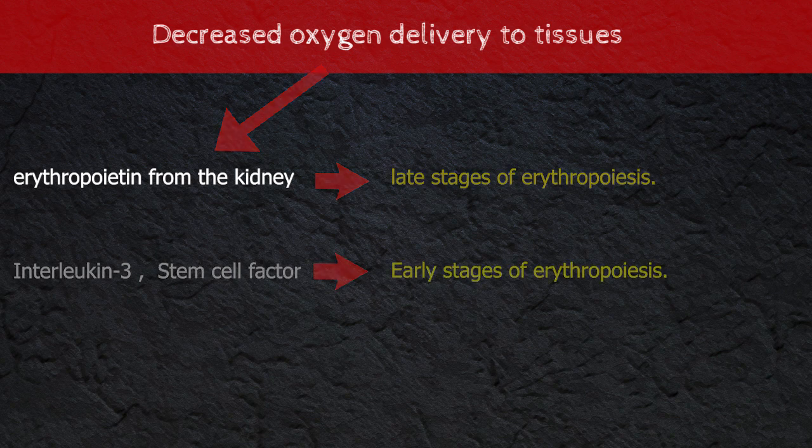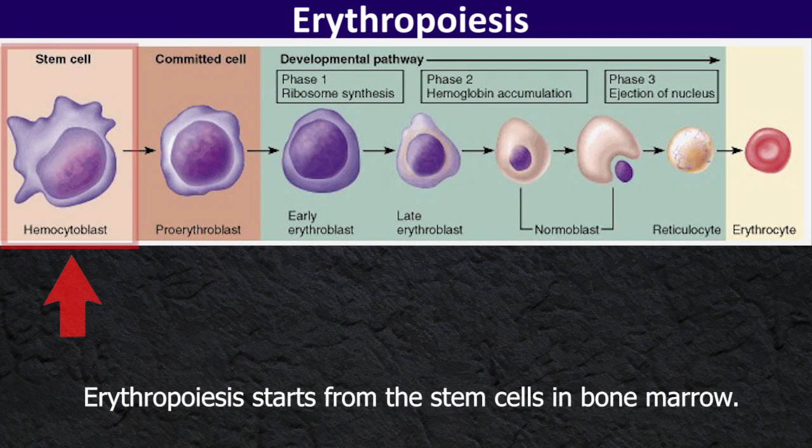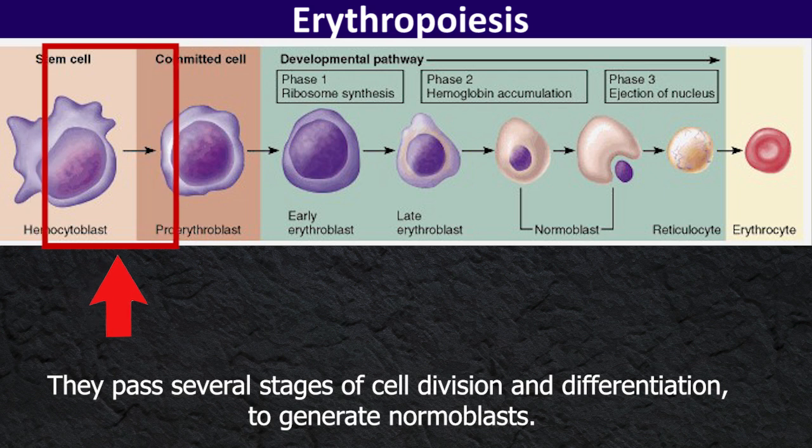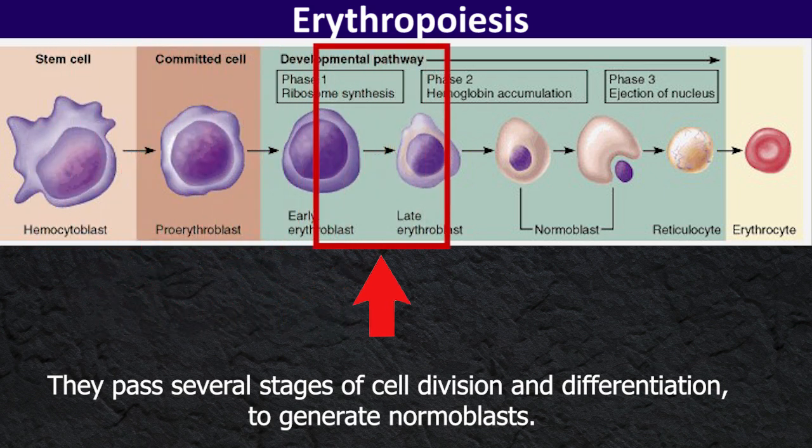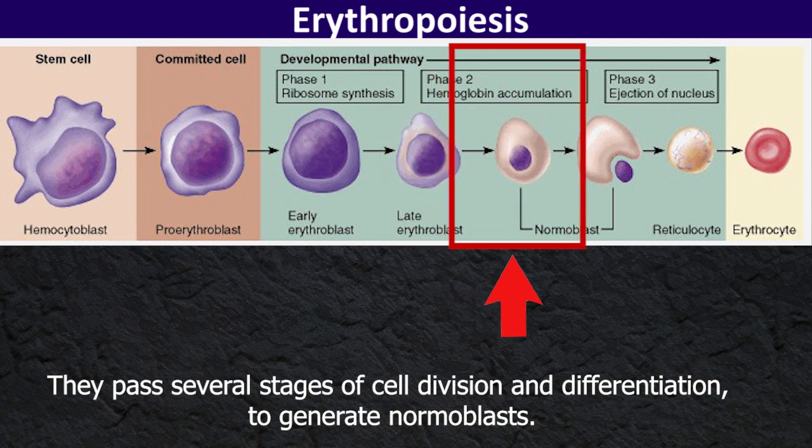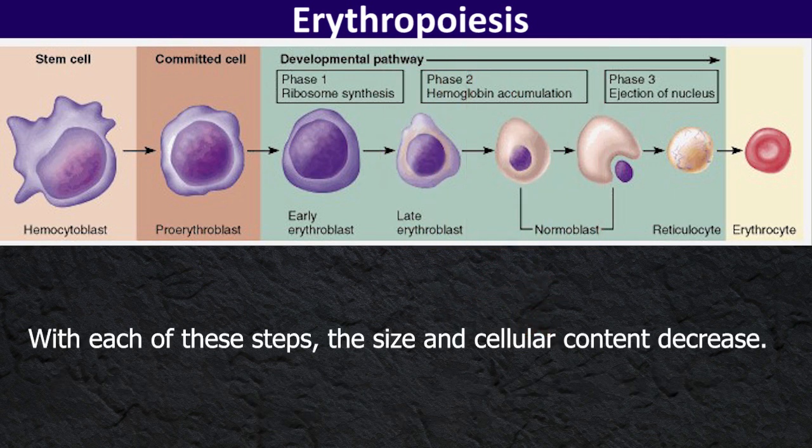Erythropoiesis starts from the stem cell in bone marrow. They pass several stages of cell division and differentiation to generate normoblasts. With each of these steps, the size and cellular content decrease.